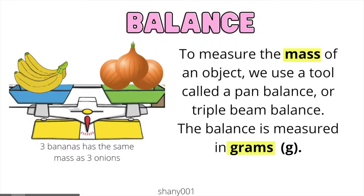Balance. To measure the mass of an object, we use a tool called a pan balance or triple beam balance. The balance is measured in grams. Three bananas has the same mass as three onions.